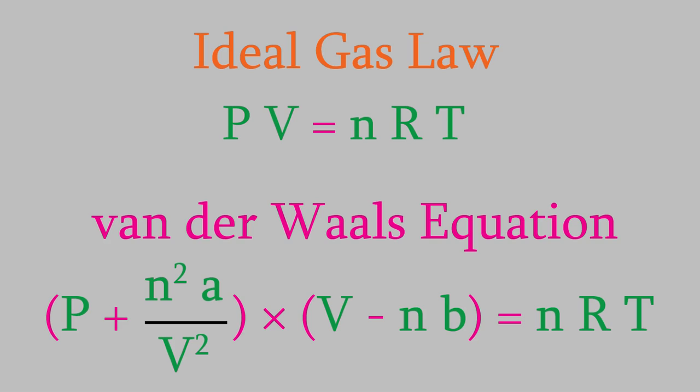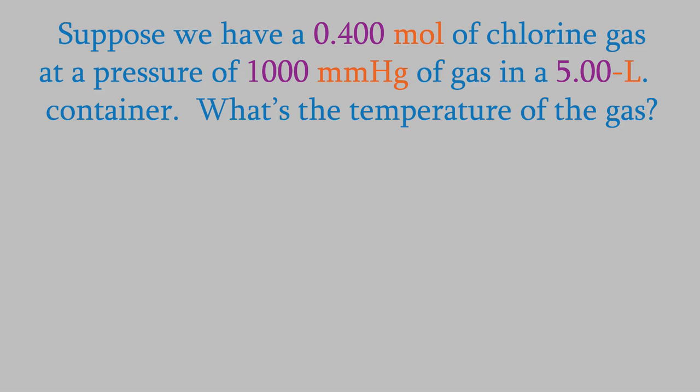So, the van der Waals equation gives us a more accurate picture of a gas than the ideal gas law does. How much better is it? Let's try an example and find out. Suppose we have 0.400 moles of chlorine gas at a pressure of 1,000 millimeters of mercury in a 5 liter container. We want to know its temperature. Let's calculate it two different ways. First, we'll use the ideal gas law.